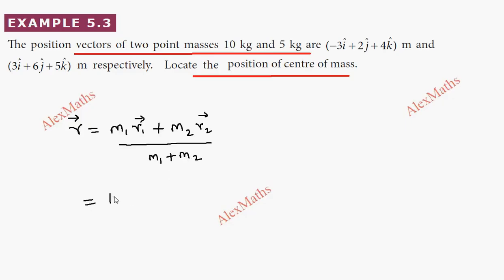m1 is 10 kg, so that position vector is minus 3i cap plus 2j cap plus 4k cap.